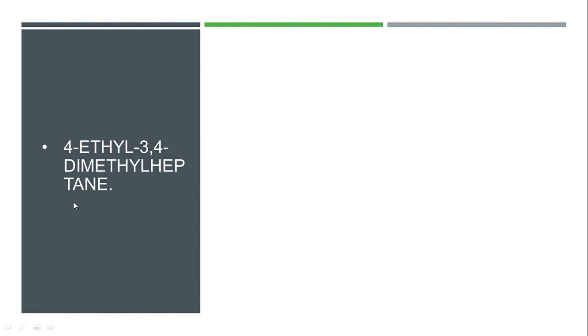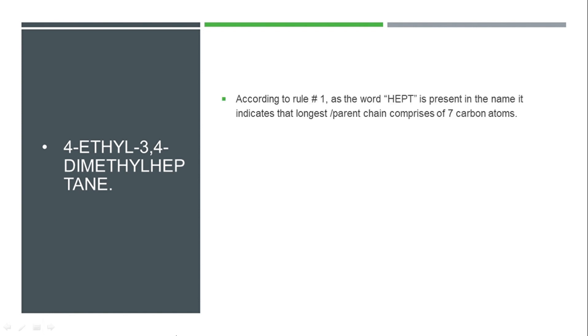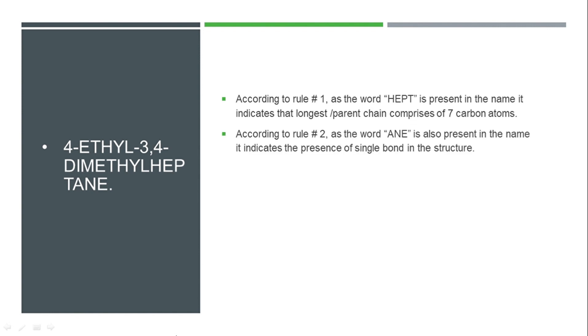The next part gives us a more complex structure: 4-ethyl-3,4-dimethylheptane. Because the phrase 'hept' is present, this indicates 7 carbon atoms. 'Ane' is present, indicating single bonds throughout. According to rule 3, when we draw the skeleton, we get a 7-carbon chain.